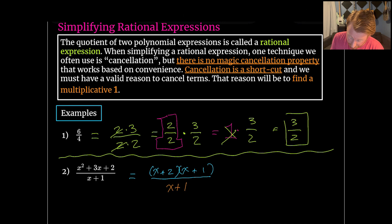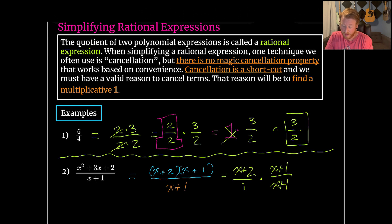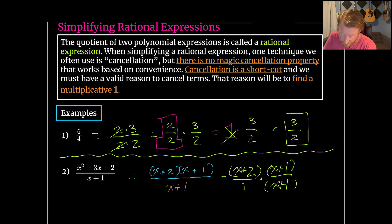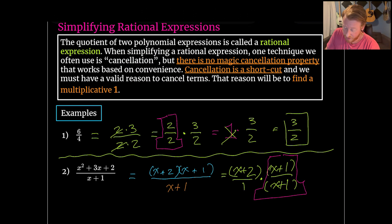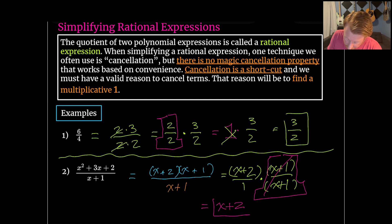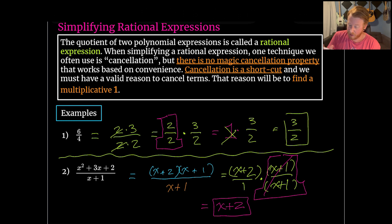Now I can see there is a big dumb one here. I can rewrite this as (x+2) over 1 times (x+1) over (x+1). That (x+1) over (x+1) is just a multiplicative one — we can throw that in the garbage. Multiplying something by 1 does not change the value. So we cancel those out and we're left with just x plus 2. When we're trying to cancel things out, we need to have a reason. There needs to be a multiplicative one, or else you'll be breaking all the rules of algebra.